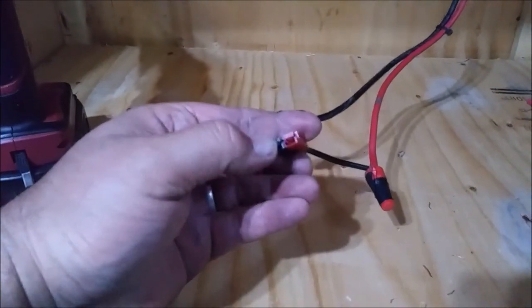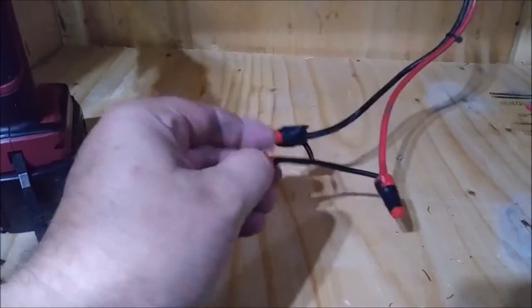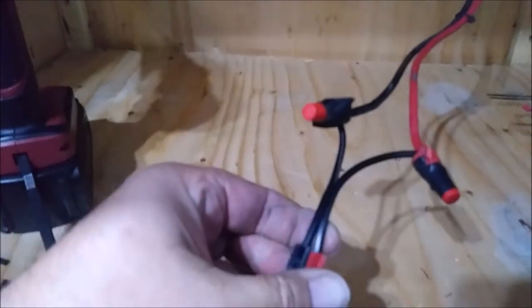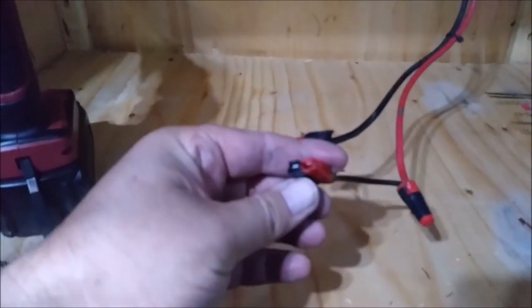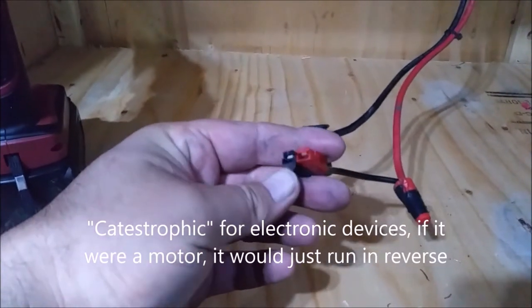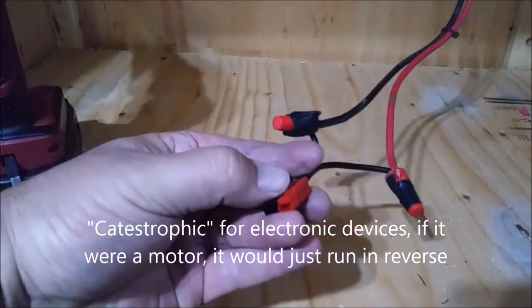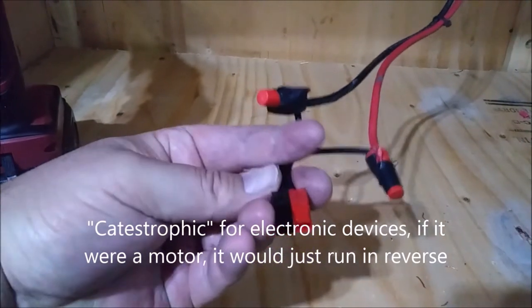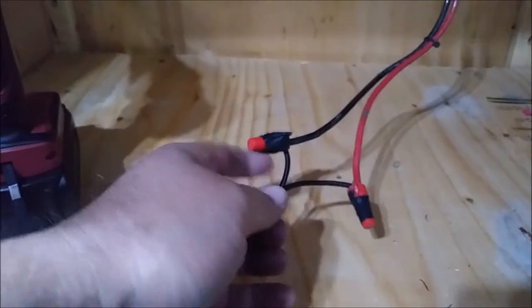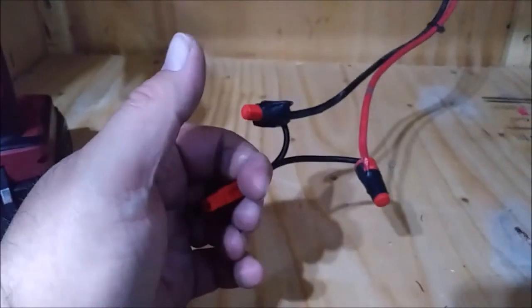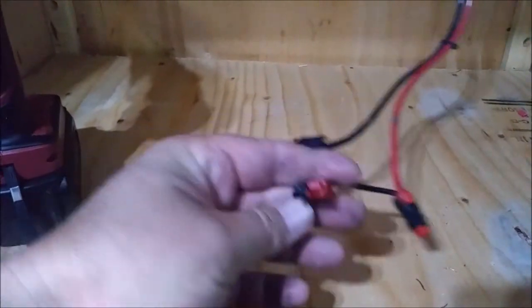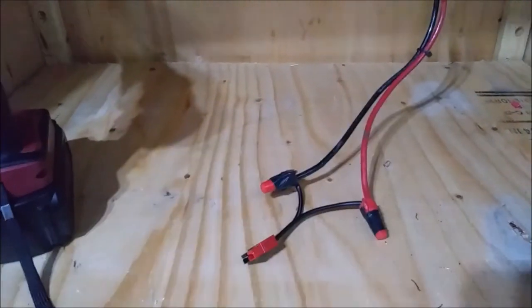I've already checked the polarity, making absolutely certain that the positive goes to the positive and the negative to the negative. It would be catastrophic to any DC device if you accidentally reversed the polarity. So let's get this taped up and I'll move that fridge in and that'll be it. We'll be done. We'll check it out at that point. Maybe grab a frosty beer out of there.